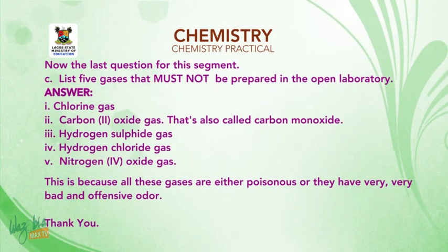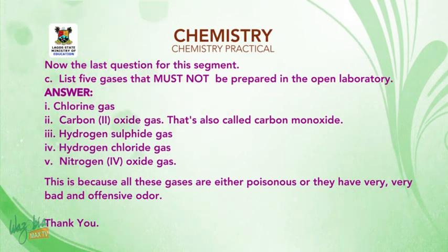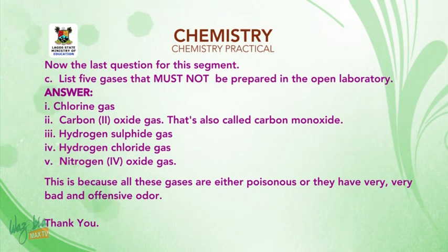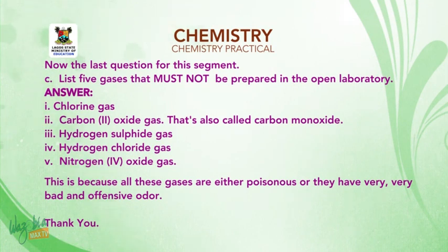The last question for this segment: list five gases that must not be prepared in the open laboratory. Number one: chlorine gas. Number two: carbon monoxide gas. Number three: hydrogen sulfide gas. Number four: hydrogen chloride gas. Number five: nitrogen dioxide gas. This is because all these gases are either poisonous or have very bad and offensive odor.